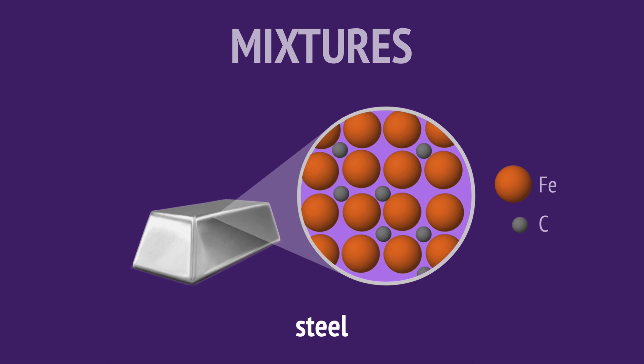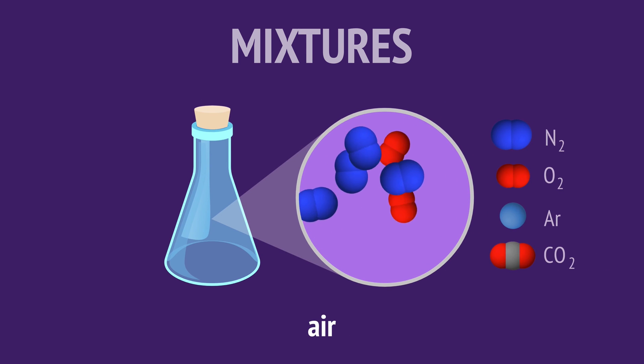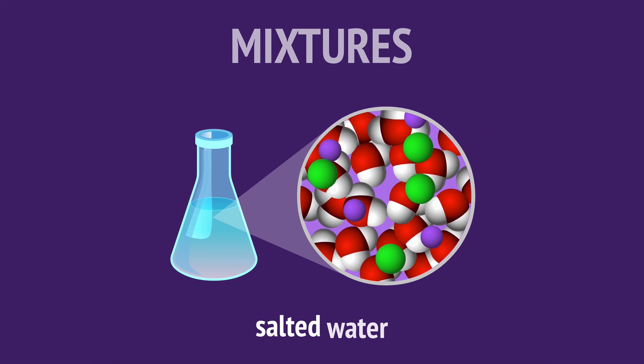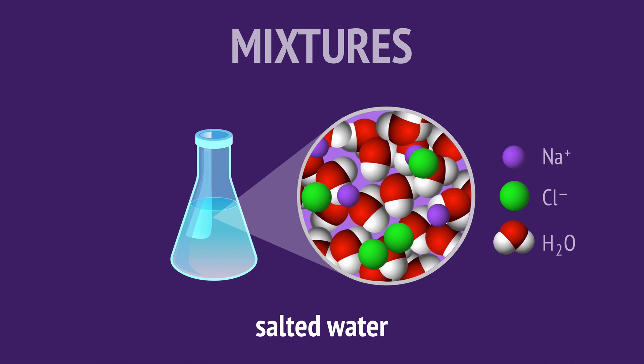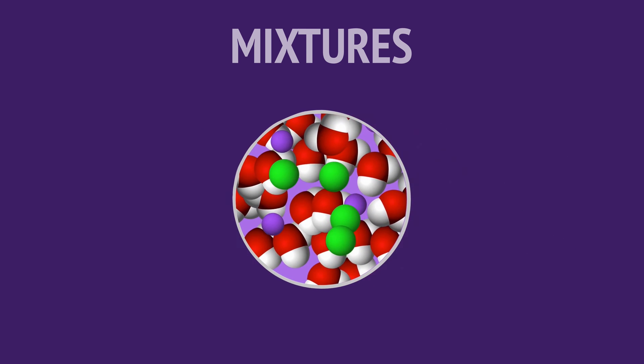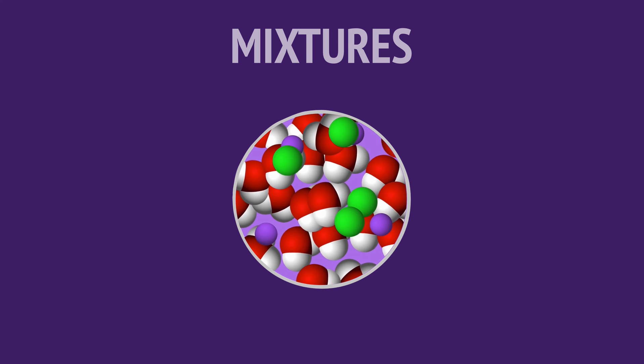Steel is a mixture of the elements iron and carbon. Air is a mixture of the elements nitrogen and oxygen with small amounts of other gases. And salted water is a mixture of the compounds sodium chloride and water. Because the pure substances in a mixture are not chemically combined, just blended together,